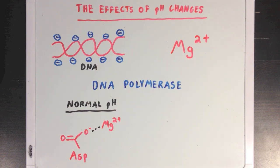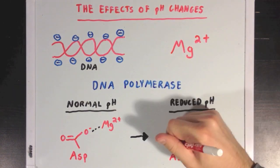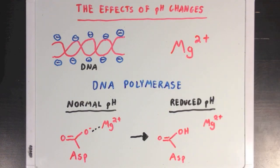If we take DNA polymerase and put it into an environment with a reduced pH, then that aspartate residue will become protonated since the pH has dropped so much. In its protonated form, aspartate no longer has a negative charge and can't hold on to that magnesium ion anymore.